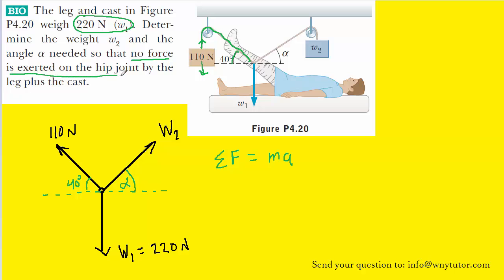So if no net force is exerted on the leg, that means that the acceleration of the leg is 0 meters per second squared.